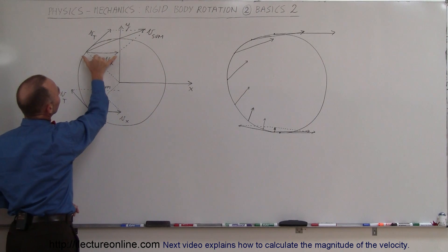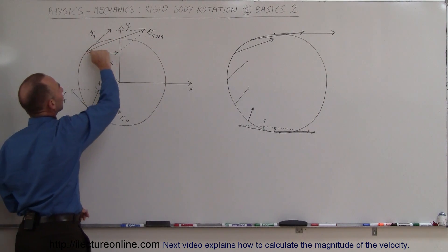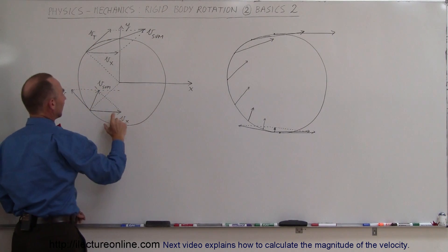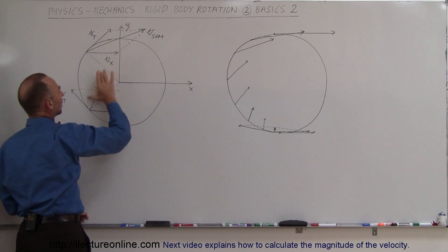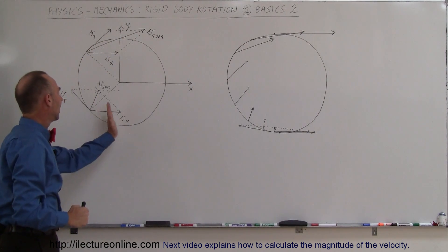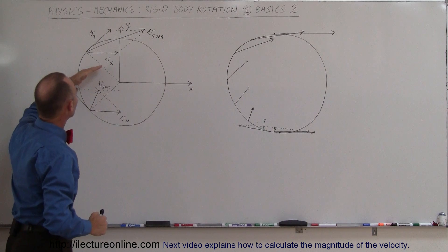Notice that this would be the tangential velocity in this direction. It's always tangent to the wheel or tire. If we add this distance together and this distance together, you can see that would be the resulting velocity.